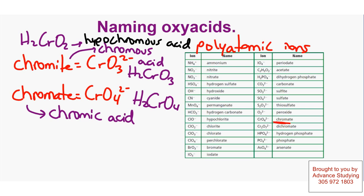And if I had to go higher in the oxygen with CrO5, that would be H2CrO5. That would be perchromic acid.